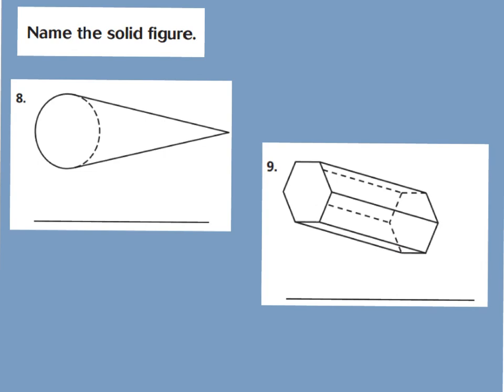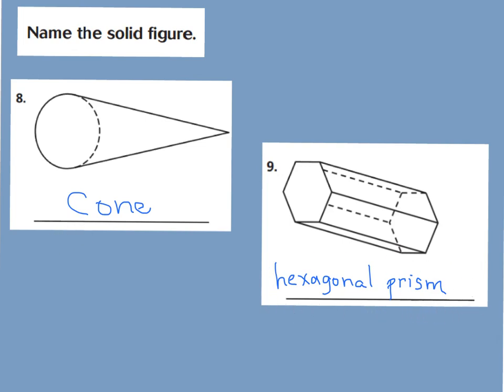For number eight, you should have said cone, and for number nine, hexagonal prism. Number eight is a cone because it has one base that's a circle with one curved surface. Number nine is a hexagonal prism because you have two hexagon bases and six rectangular faces.